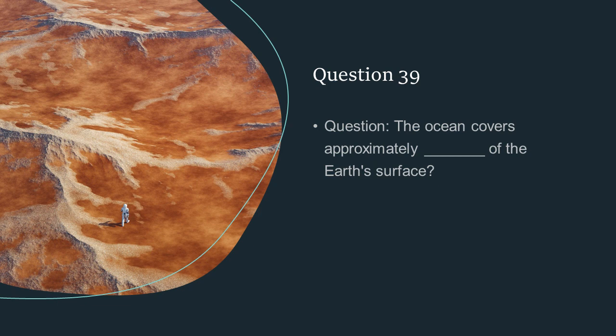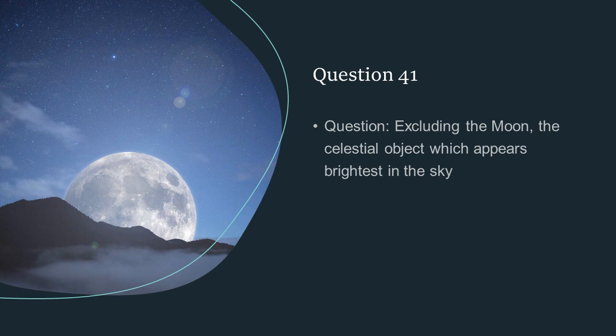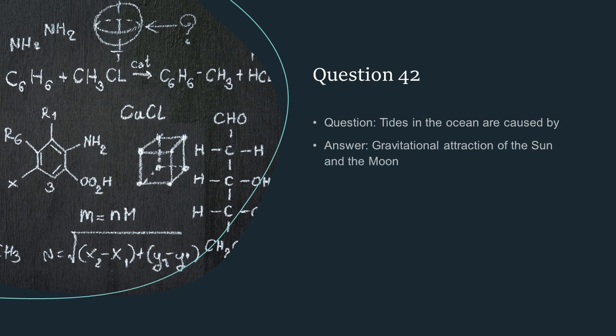The ocean covers approximately 70% of the earth's surface. Monsoon is caused by seasonal reversal of winds. Excluding the moon, the celestial objects which appear brightest in the sky at night: Sirius. Tides in the ocean are caused by gravitational attraction of the sun and moon.